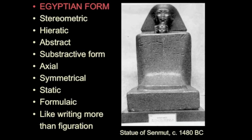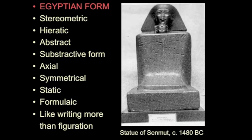It looks like it's made out of cheese — or to use more elegant words, we could say stereometric. It's a solid form, or it is subtractive. We understand this is a form created not by adding bits and pieces together, but simply taking a simple elemental geometrical volume and removing form. What else? It's symmetrical. There's a strong axis in the center, and the forms mirror around that central axis.